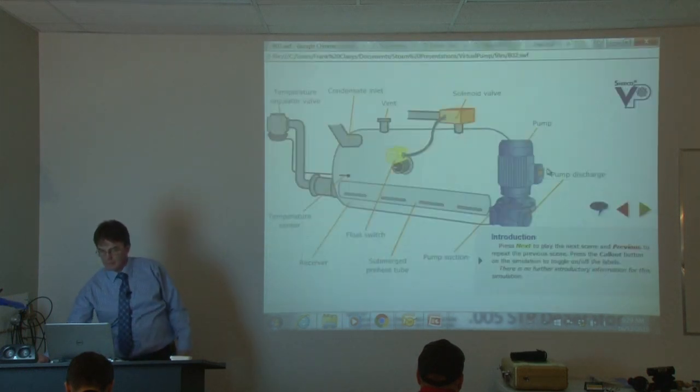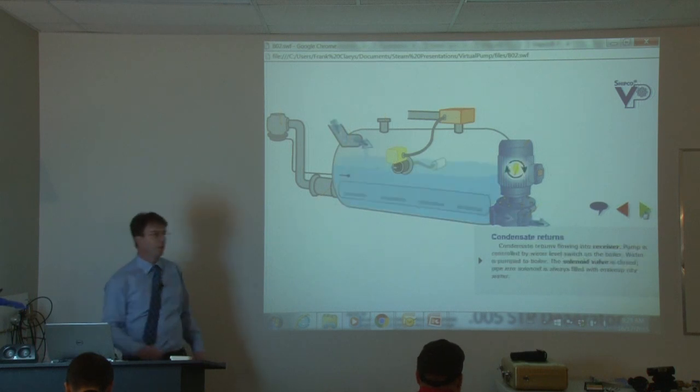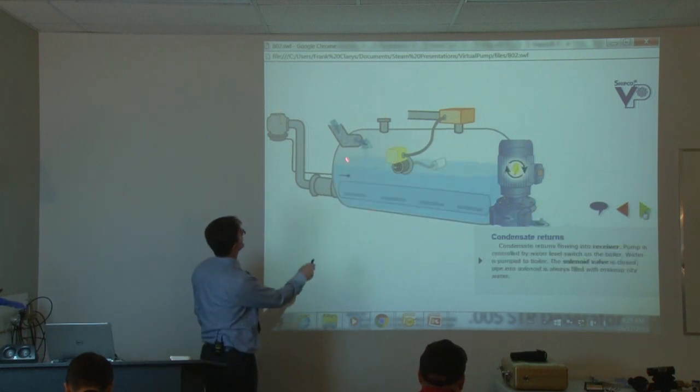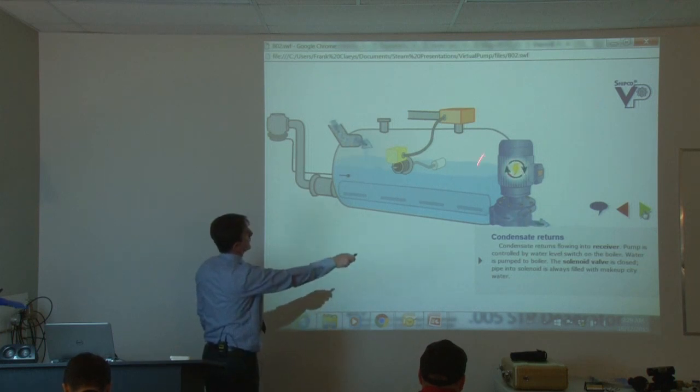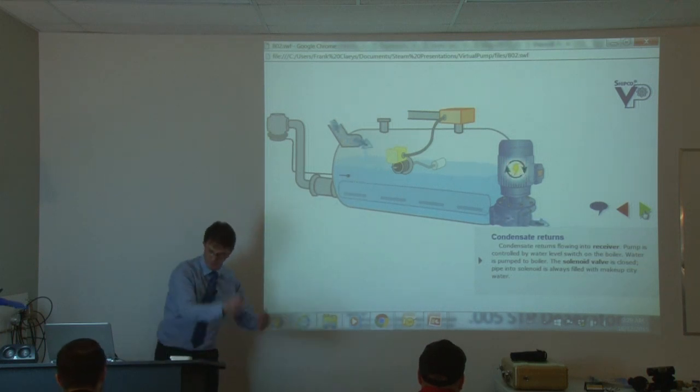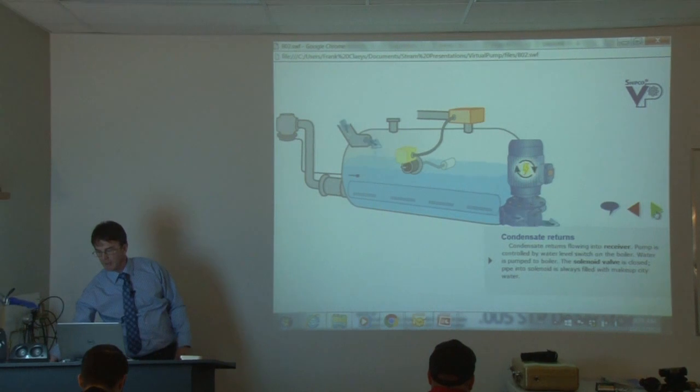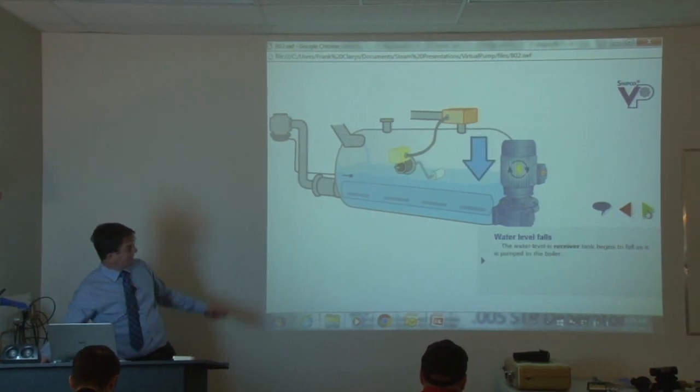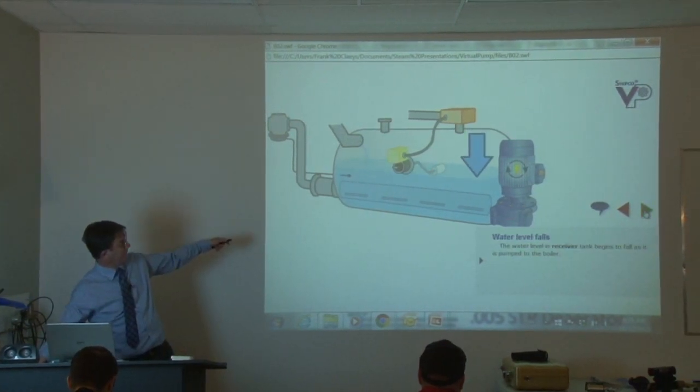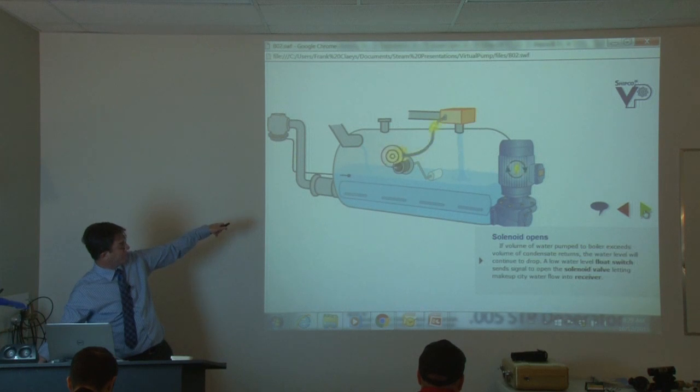So now we can take it one step further and we have a boiler feed pump with a preheat. So the condensate is coming back from the building. The boiler tells the pump, give me water. So it's pumping away, happily pumping away. The level inside the tank goes down. So our float goes down, makes contact and that tells our solenoid to come in.